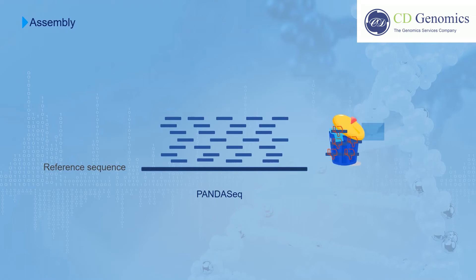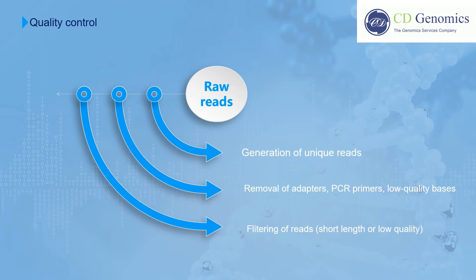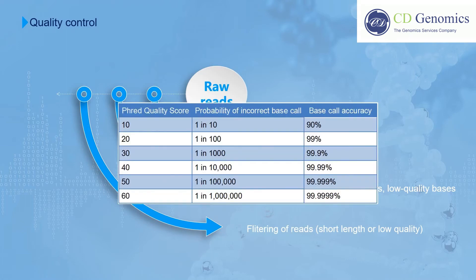The process of quality control includes the generation of unique reads, removal of adapters, PCR primers, and low-quality bases, as well as filtering of reads with short length or low-quality scores. The removal of low-quality bases depends on the Phred quality score, also known as Q-scores. Q is the output quality score for Illumina platforms. Q10 represents that one error is expected for every 10 bases, Q20 represents one error for every 100 bases, and so forth. Elimination of sequences with low-quality scores can improve the accuracy of bioinformatics analyses.